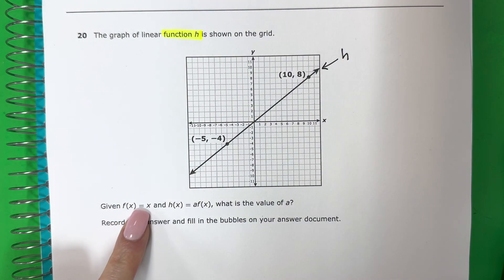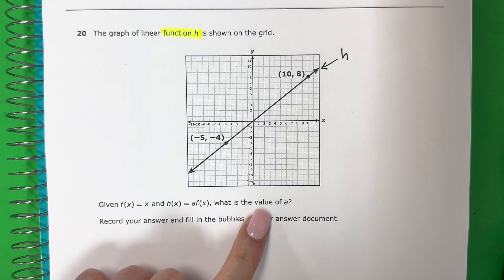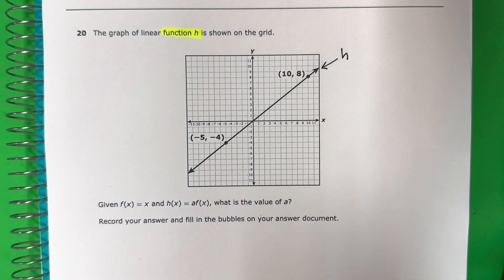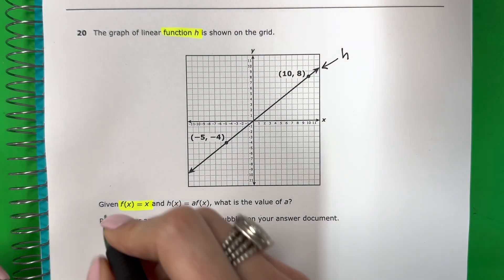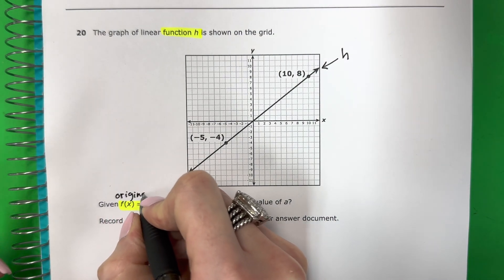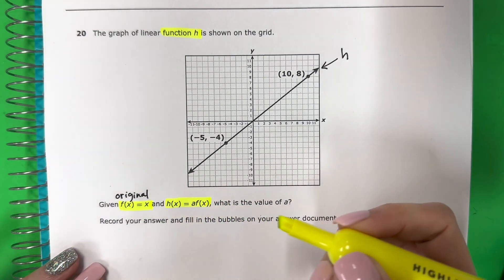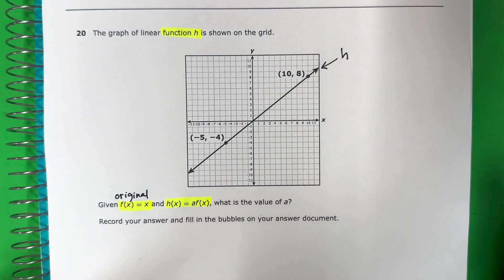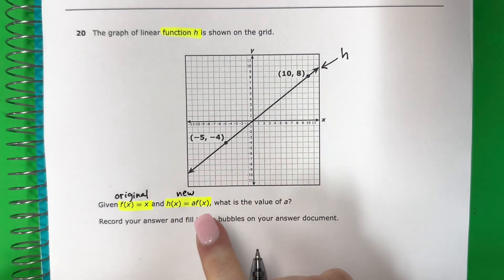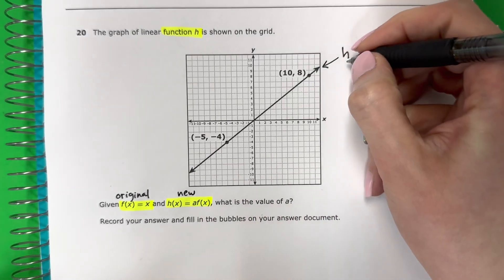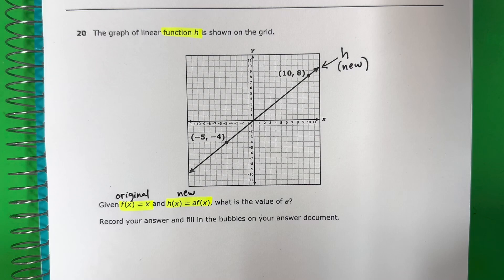Question 20. Given f of x equals x and h of x equals a f of x, what is the value of a? So I have f of x equals x. This is my original. Este es mi original. And then I have h of x equals a f of x. This is my new one. Este es mi nueva línea. This is my new line. And this is h. This is my new line.